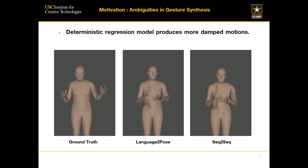You will see that compared to the ground truth, this kind of deterministic regression model seems to be producing a more damping motion. And this makes the gesture look less realistic when you compare it with the ground truth. The main motivation of our method is to address these kinds of issues when learning the gesture generator.